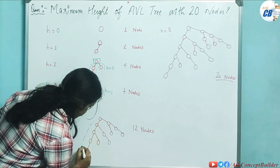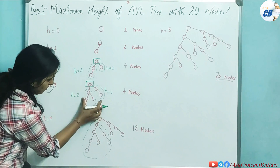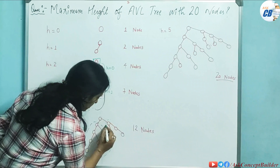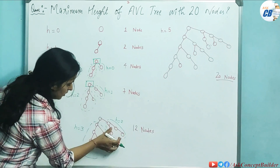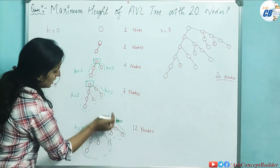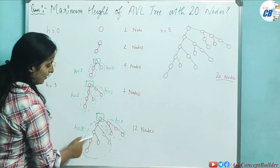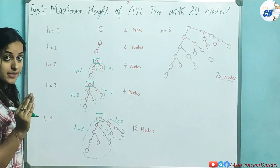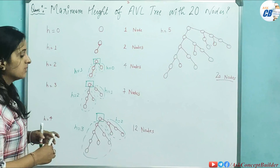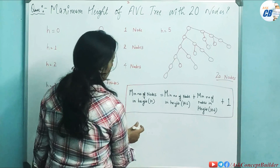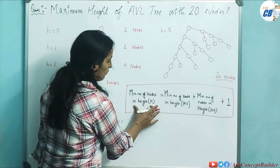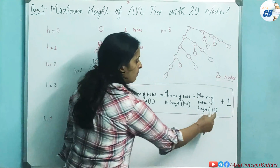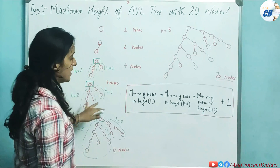We can verify the pattern with the trees we drew: the subtree of height 3 contains the full subtree of height 2, and the height 4 tree uses height 3 and height 2 subtrees. The direct formula is: N(h) = N(h-1) + N(h-2) + 1, where N(h) is the minimum number of nodes required for height h.